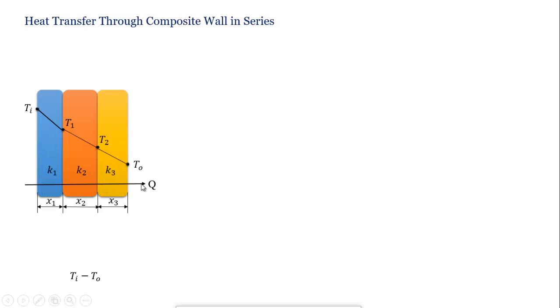Q will be the heat flow through this wall. Ti will be the inner temperature and To will be the outer temperature. The first slab has thickness x1 and thermal conductivity k1. The second slab has thickness x2 and thermal conductivity k2.